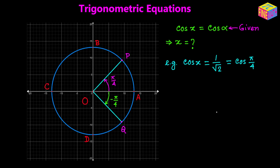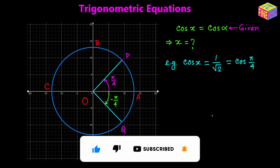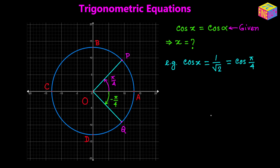I have taken an example which is cosine of x equals 1 over square root of 2, which is equal to cosine of pi over 4. For this example I have taken a unit circle and I have plotted the points P and Q on the circumference of this unit circle, where OP makes a positive pi over 4 angle.